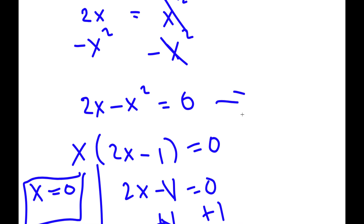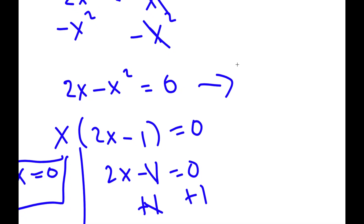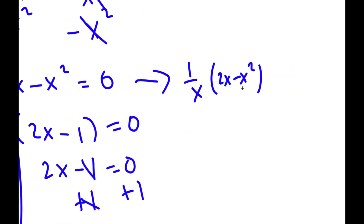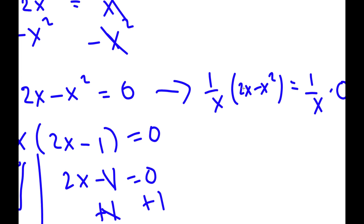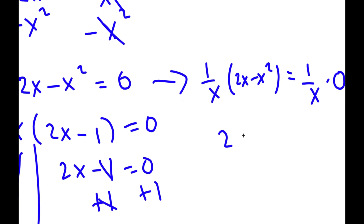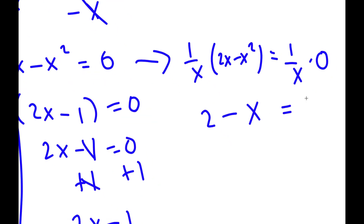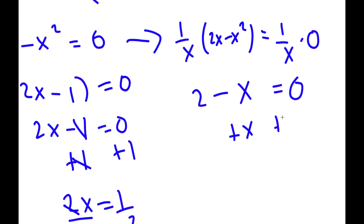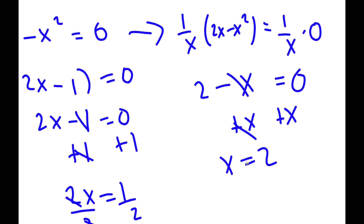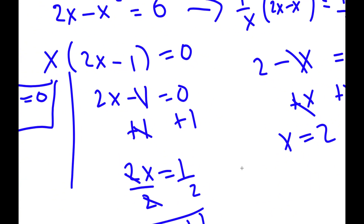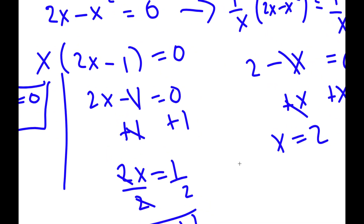Another way, instead of factoring out x, I can multiply both sides by 1 over x. So 1 over x times (2x minus x squared) equals zero. 2x times 1 over x is 2, and x squared times 1 over x is x, so I have 2 minus x equals zero, giving x equals 2. This is another solution.